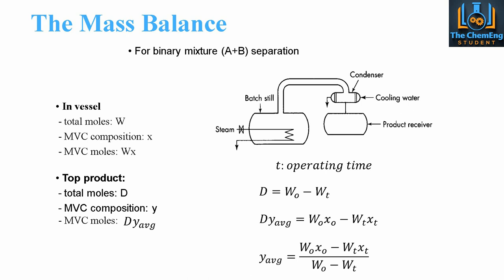The operating time is denoted by T. D, the total moles of the top product, is equal to the total moles at the initial time minus the total moles at the final time. When we add in compositions of the MVC, we get D multiplied by Y average equals the initial composition multiplied by W naught minus the final composition XT — that's the final composition after a given operating time.